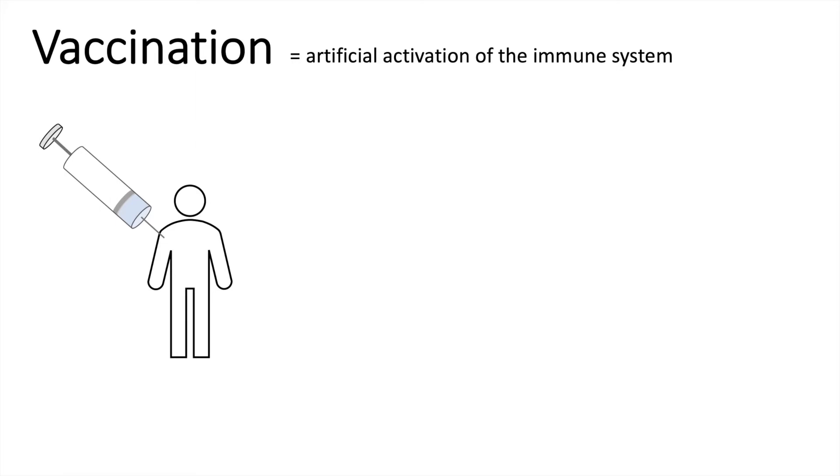Let's assume the patient gets vaccinated and through this vaccine parts of a virus will make it into the body. Now the adaptive immune system gets activated and specific antibodies are produced against the invader.